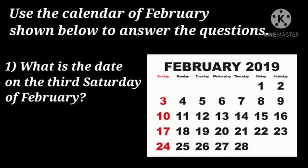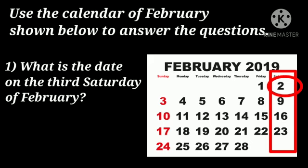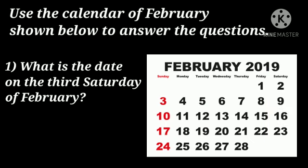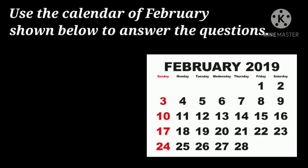The first question is: what is the date on the third Saturday of February? Let us search in the Saturday column. This is the Saturday column. We want the third Saturday — first, second, and third. So the date is 16-2-2019, which means 16th February 2019.